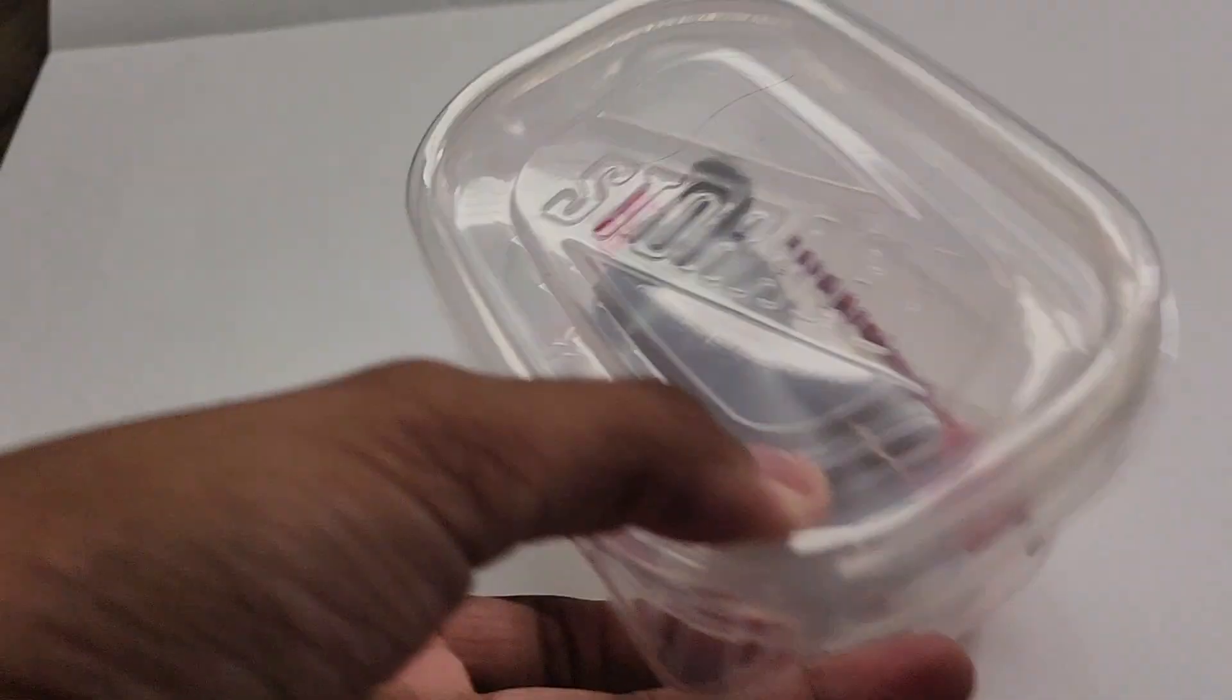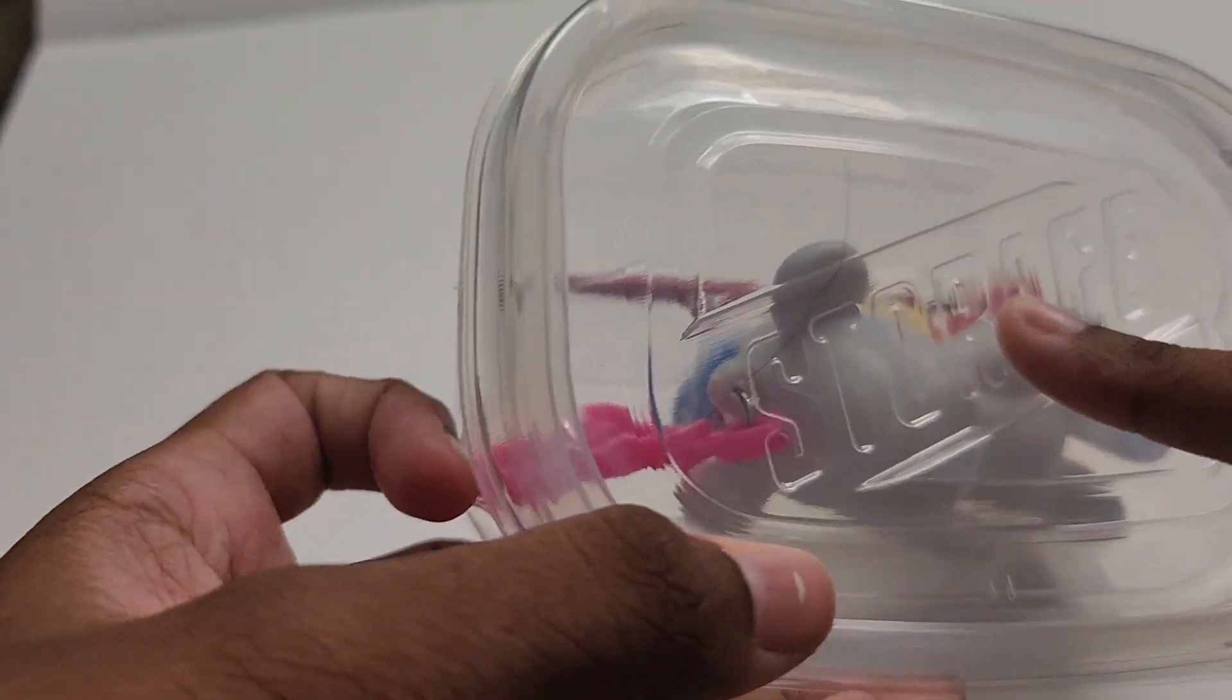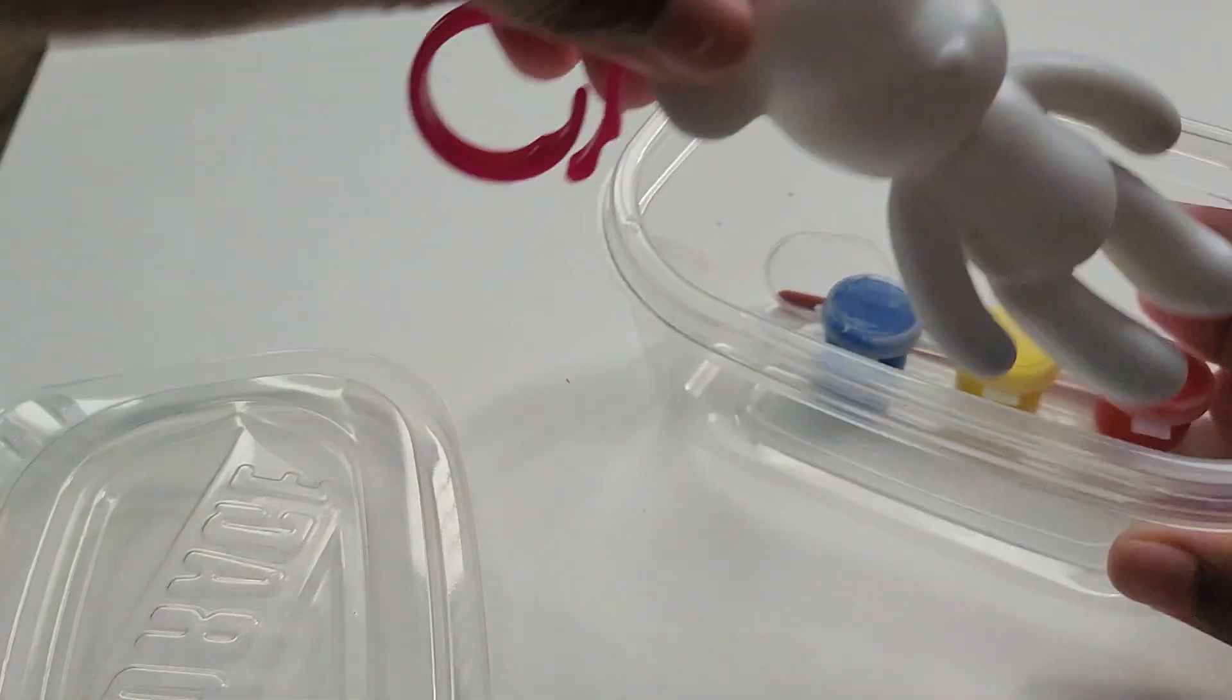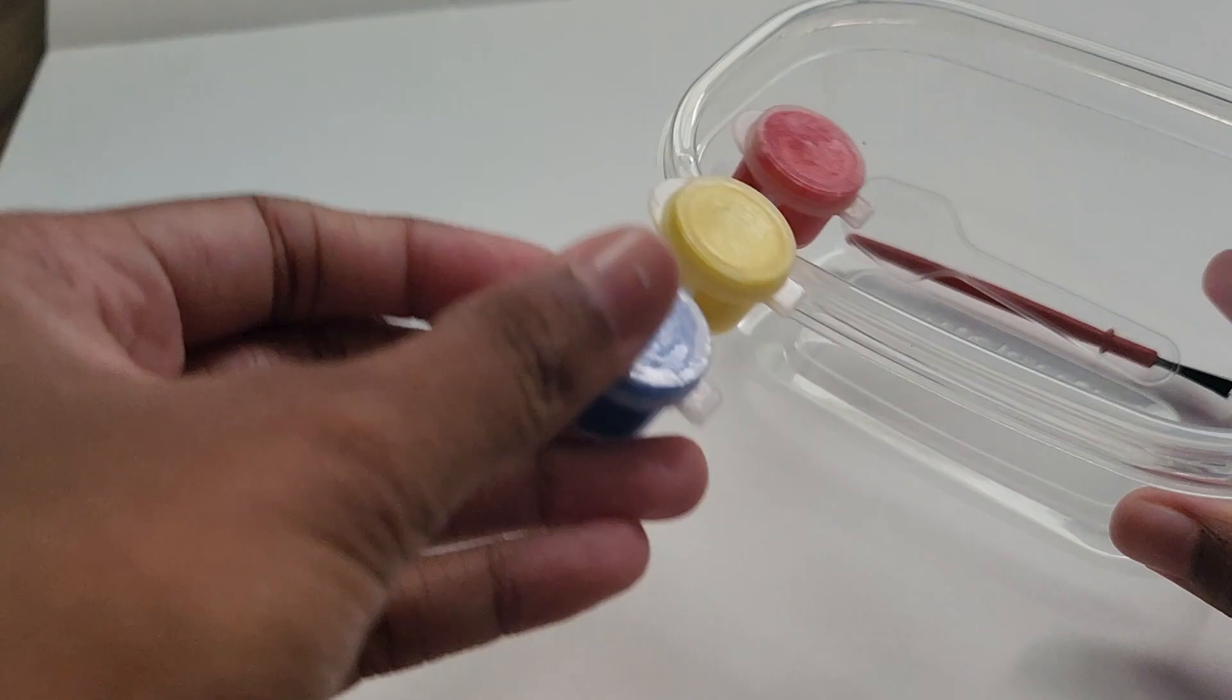What's up everybody, it's GD Game with Shaka. Today we have this storage container and a bear keychain, a white one, and I have paint, a spoon, and this.